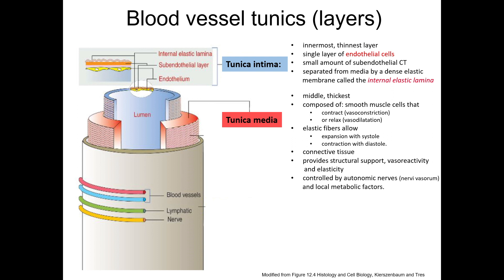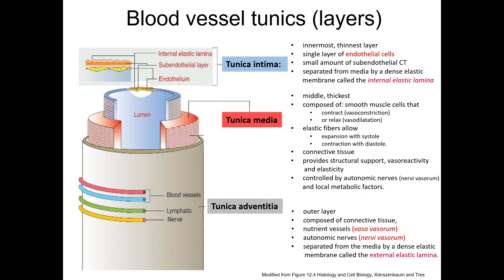The collagen fibers provide structural support and limit the distensibility of the vessel. The tunica adventitia is the outermost layer and consists mostly of connective tissue. Depending on the vessel, an external elastic lamina is present that separates the tunica media from the tunica adventitia. The tunica adventitia of larger vessels can contain vasa vasorum, analogous to the epicardium.